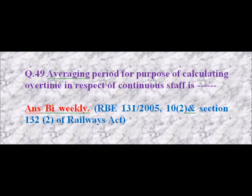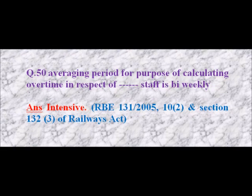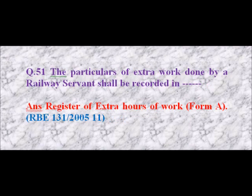Question 49: The averaging period for the purpose of calculating overtime in respect of continuous staff is — Answer: 4 weeks. Question 50: The averaging period for the purpose of calculating overtime in respect of blank staff is 4 weeks — Answer: intensive. Question 51: The particulars of extra work done by a railway servant shall be recorded in — Answer: Register of Extra Hours of Work, Form A.